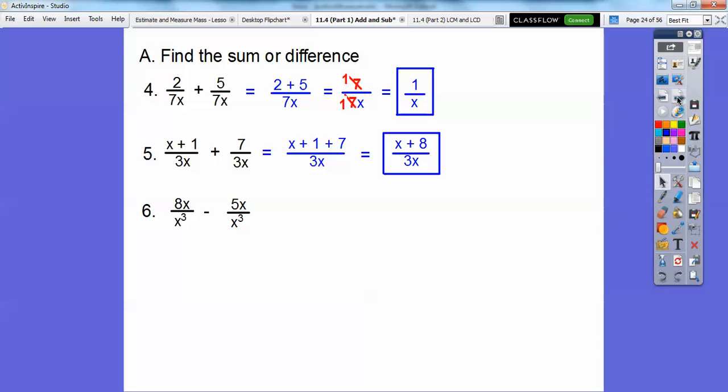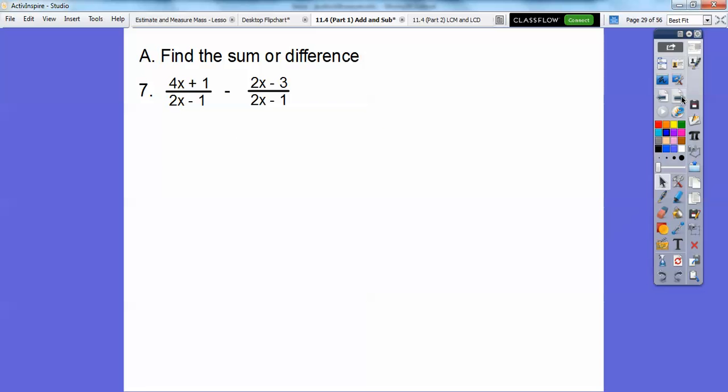Let's do this one. They both have the common denominator, x cubed. So we'll combine the numerators: 8x minus 5x is 3x. Here, can I cancel these x's? Yes, I can because there's no plus sign or a minus sign. So we can take off an x. And so this x cubed becomes x squared now. So it's 3 over x squared is our answer.